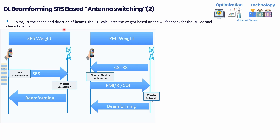Why do we expect gain from SRS-based downlink beamforming? First, SRS is transmitted periodically by the UE, so the gNB can receive timely updates about the downlink channel propagation and make more accurate weight calculations. Second, SRS is transmitted across the full bandwidth, allowing the gNB to get a precise wideband channel estimate for more accurate beamforming assignment.